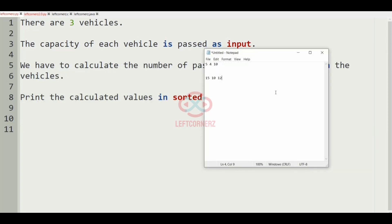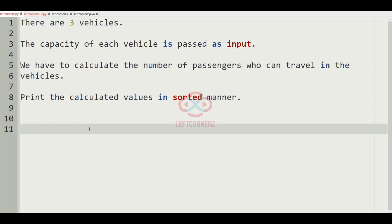Now we will take our first case. So here we have the capacity of each vehicle. We have C1 as 5, C2 as 4, and C3 as 10.